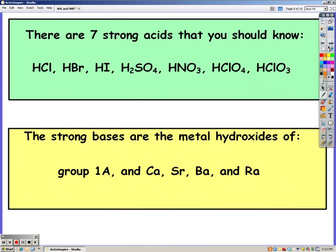There are 7 strong acids that you need to know: hydrochloric acid, hydrobromic, hydroiodic, sulfuric, nitric, perchloric, and chloric acid. If it's one of those 7 strong ones, you will not have a Ka and they're all of equal strength.